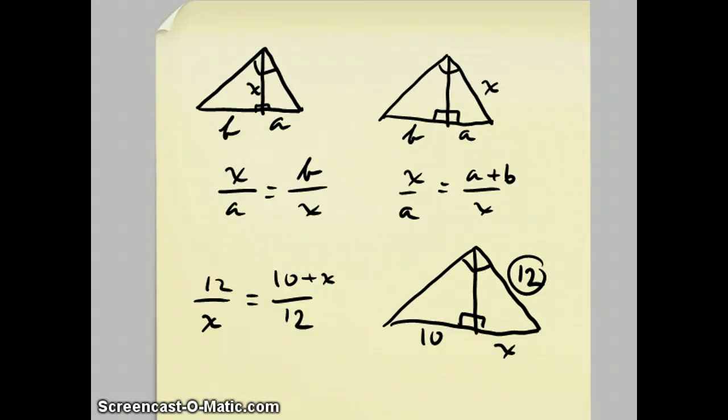I'll cross multiply get 144 equals 10x plus x squared. I'll rearrange this to x squared plus 10x minus 144 equals 0.